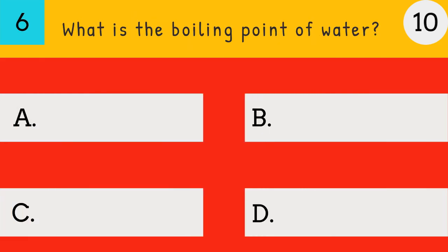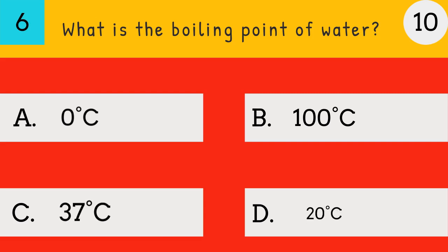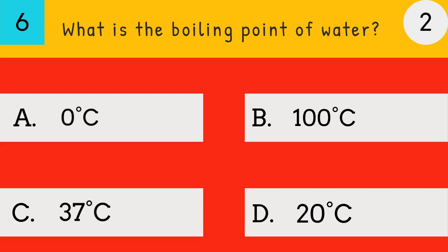What is the boiling point of water? Zero Degrees Celsius, 100 Degrees Celsius, 37 Degrees Celsius, 20 Degrees Celsius. Answer: 100 Degrees Celsius. The boiling point of water is 100 degrees Celsius.